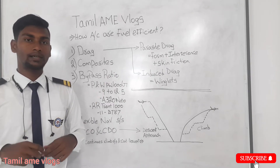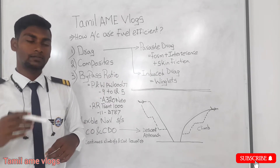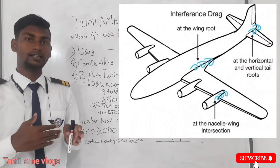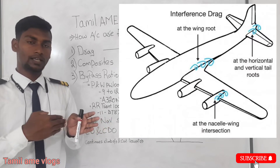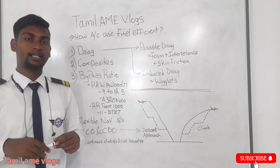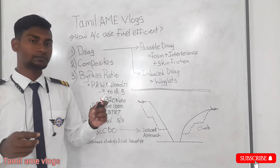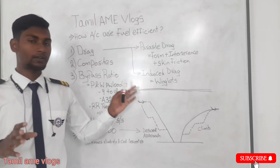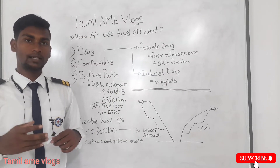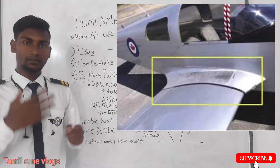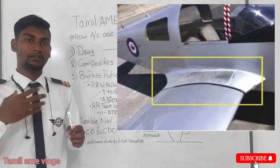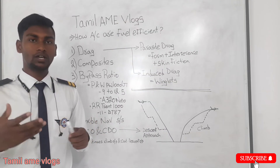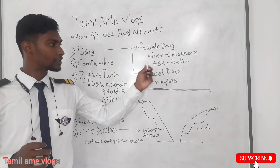Interference drag, as the name implies, occurs where surfaces interfere with each other. For example, the fuselage and the wing interfere in one area called the wing box, and drag occurs there — that is called interference drag. To reduce interference drag, we reduce sharp corners in the interference area by using fairings and cowls, which smooth those surfaces and reduce the drag.